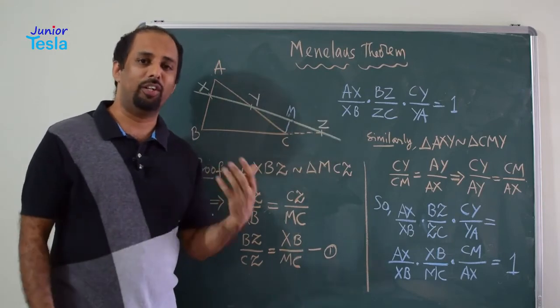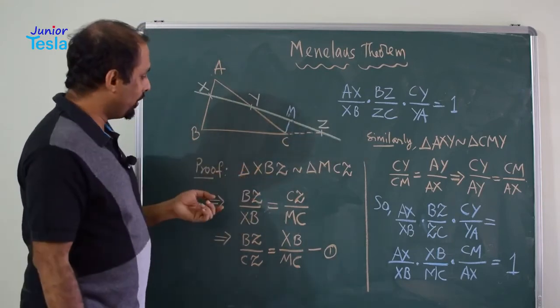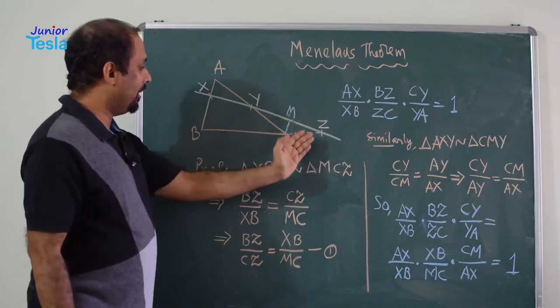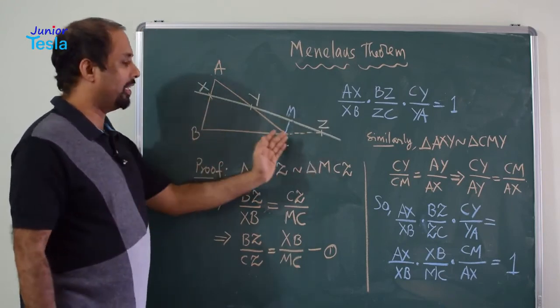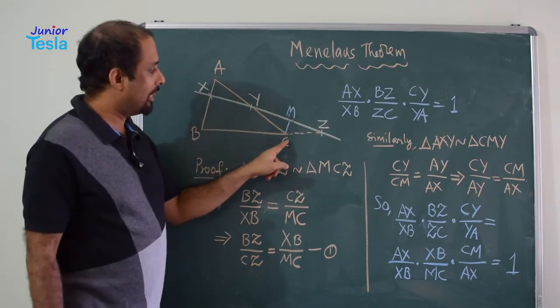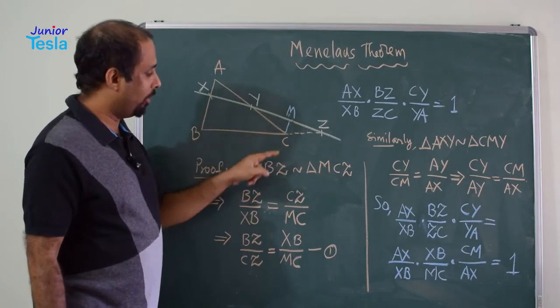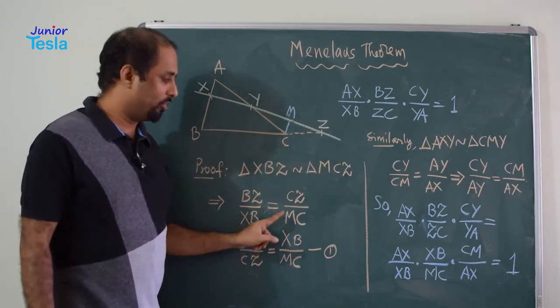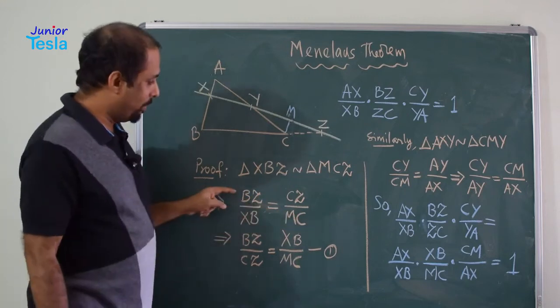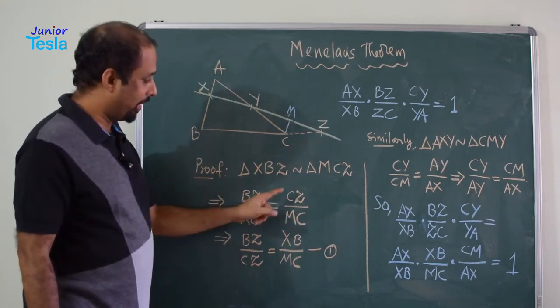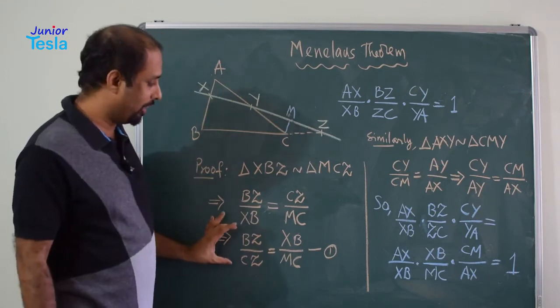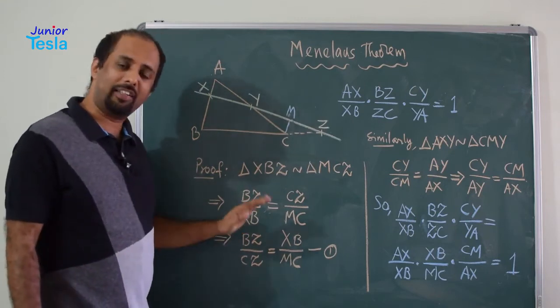Now, let us see what we can do with this. We are going to take some ratio. For example, here BZ divided by XB. So, two sides, BZ divided by XB is equal to corresponding sides, CZ divided by CM or MC. So, we got one ratio. Now, we can just rearrange. So, BZ divided by CZ is equal to XB divided by CM or MC. So, we got one ratio here, one proportion here. Let us keep it aside.